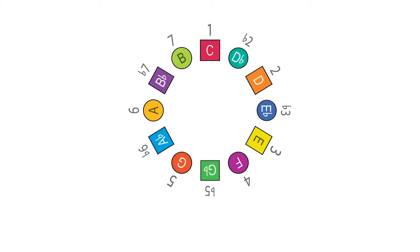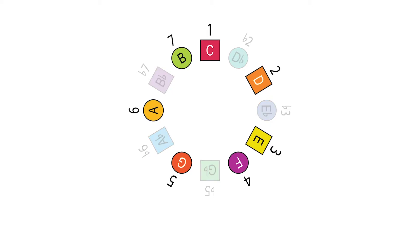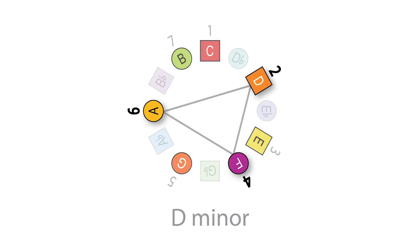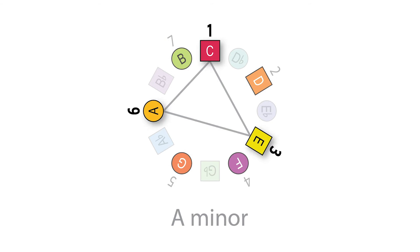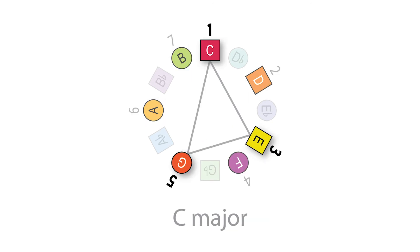Chords themselves are just subsets of the major scale. We can take some notes from the major scale and combine them together to create nice harmonies that are actually really simple to build by playing every other note in the major scale. So to play a C major chord, for example, you start on interval 1, C, skip interval 2, D, to play interval 3, E, skip 4, F, to play 5, G, and combined these three notes, C, E, and G, are a nice sounding chord — C major.